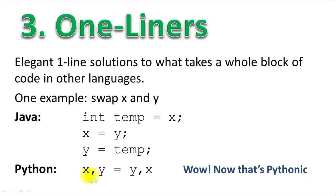In Python, simply X, Y equals Y, X. And wham, you swap two variables. That simple.